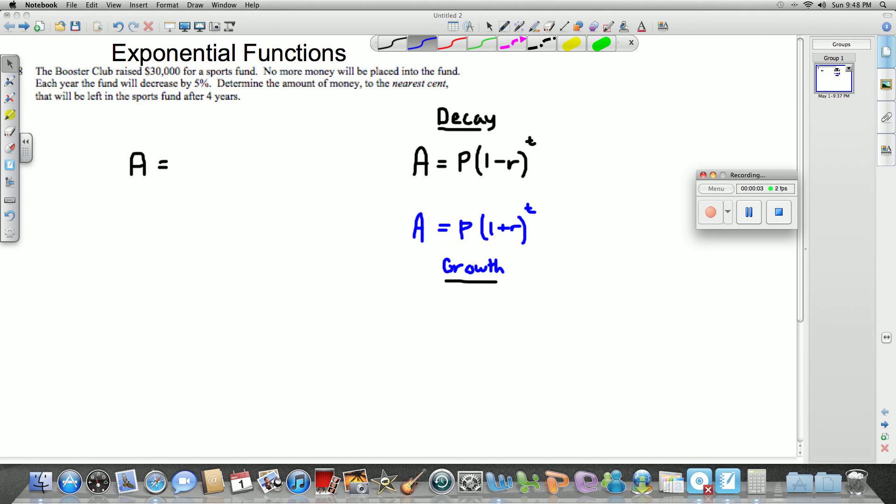Okay, so we're going to do an exponential function question. It talks about a fund that decreases by 5% a year. Now since it's going down, we're going to have to use the decay function where it's 1 minus because the amount will decrease over time.